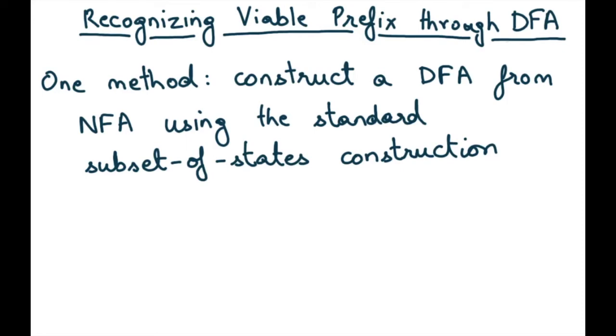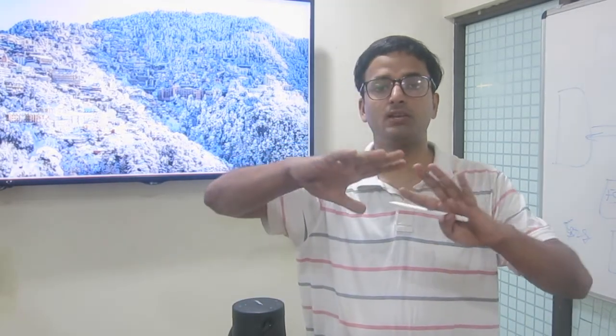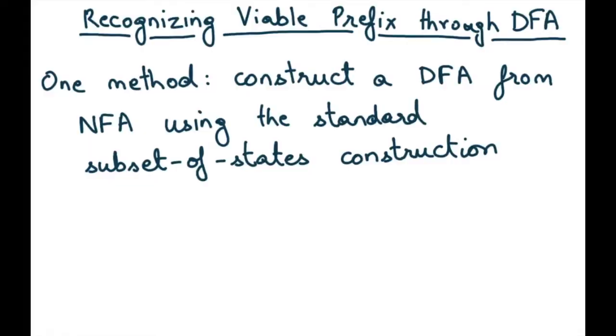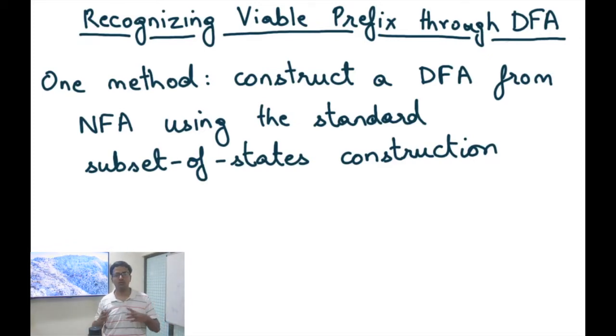Last time we discussed the construction of a non-deterministic finite automaton (NFA) for recognizing whether a string is a viable prefix of a context-free grammar. While we discussed the construction as an NFA, we had to track all possible states that a string could be in at any point in time — basically a subset of the states of the NFA. Another formulation of the same algorithm is through a DFA, constructed by taking the NFA and applying the standard subset-of-states construction.